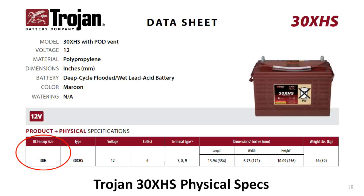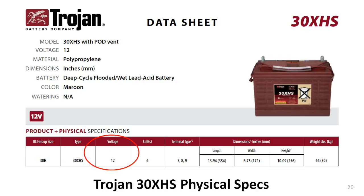The first column in the table refers to the battery's size and shape. There are standardized dimensions defined by the Battery Council International, abbreviated BCI. Some of the most common sizes are called Group 24, Group 27, Group 31, and so forth. The 30XHS battery conforms to the dimensions for a Group 30H. The second column is labeled type but really should be labeled model, as 30XHS is a Trojan model number. The third column repeats the voltage — 12 volts — and column four tells you there are six individual cells inside the case, which is standard for a 12-volt lead-acid battery.